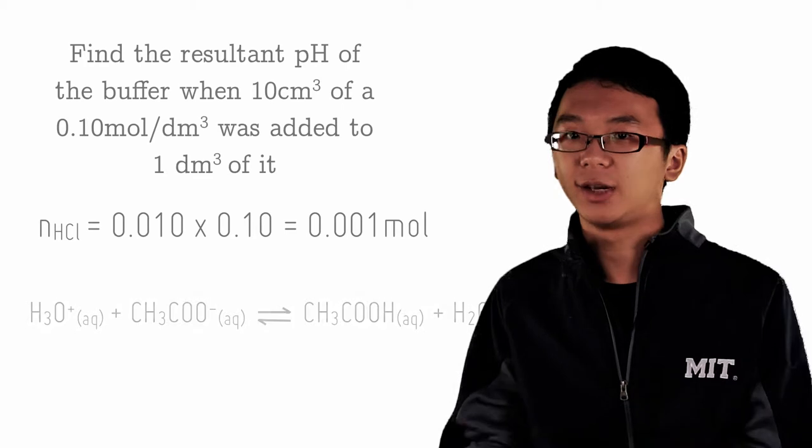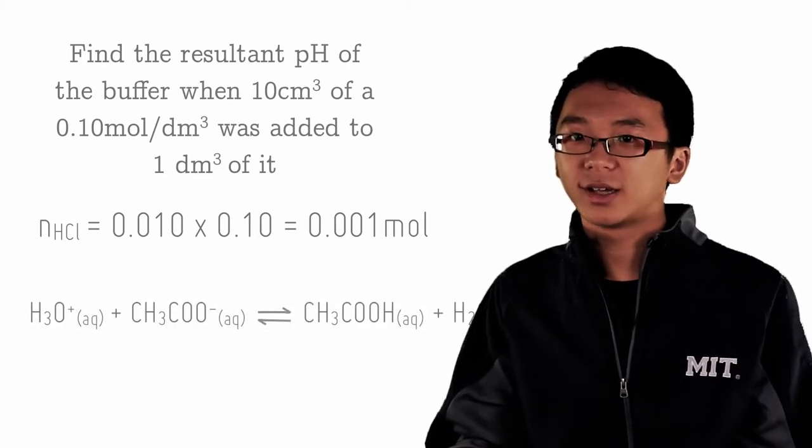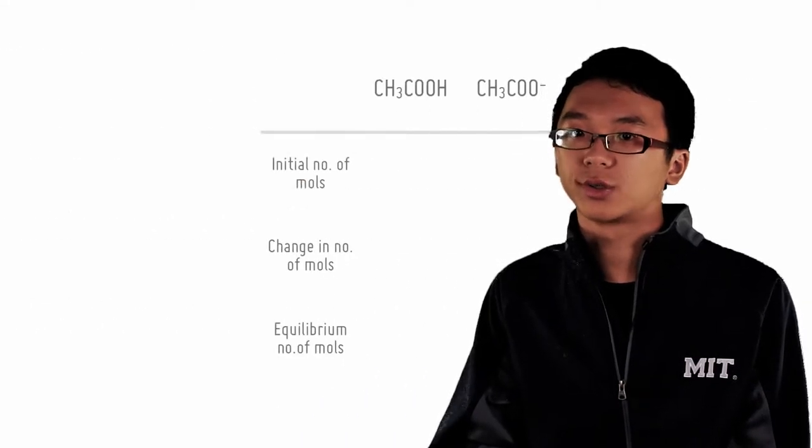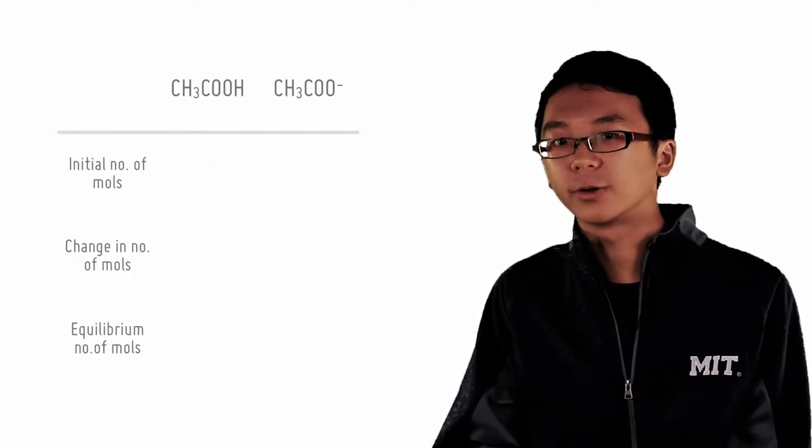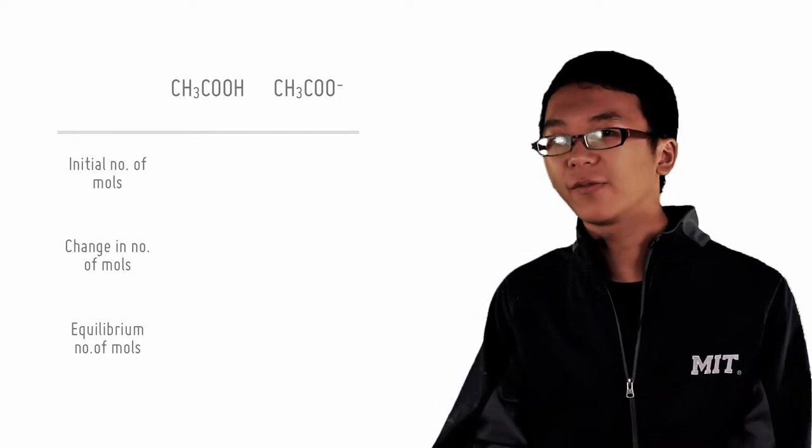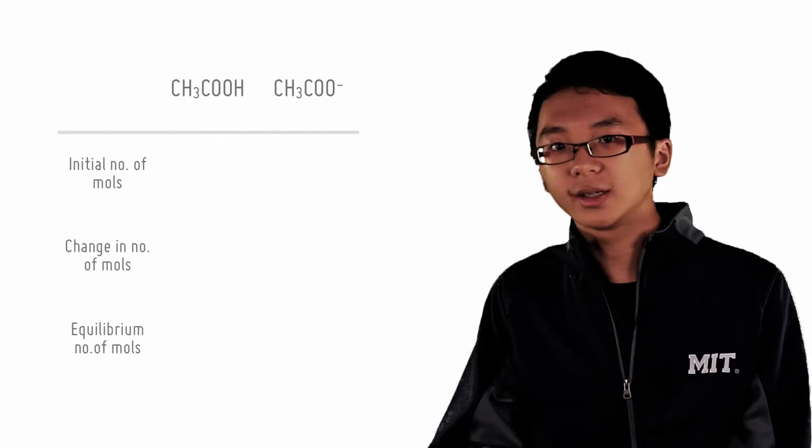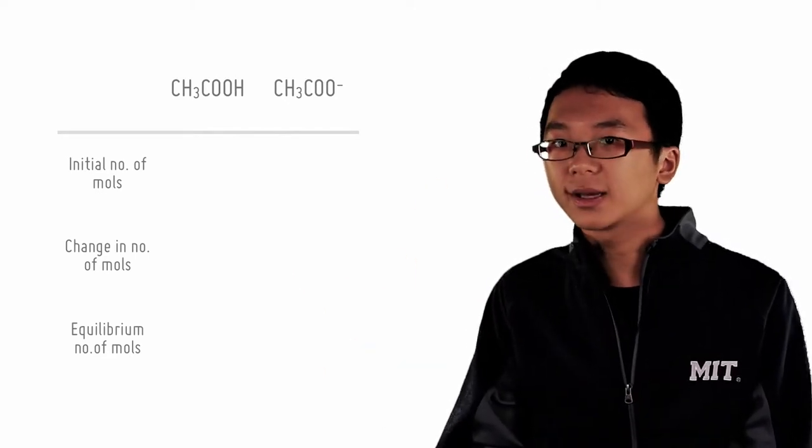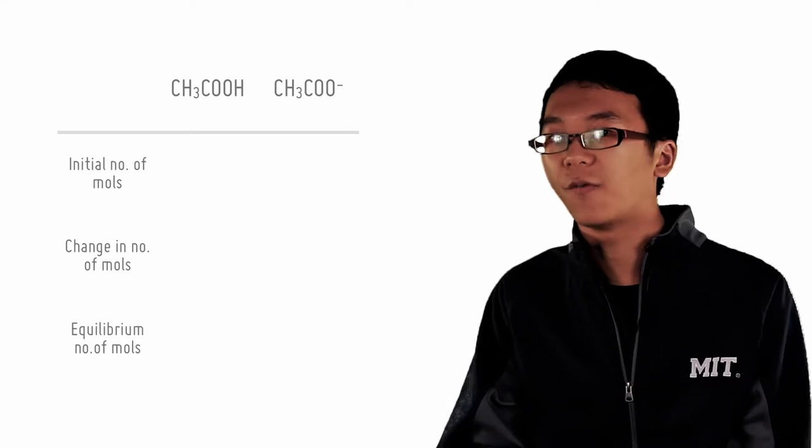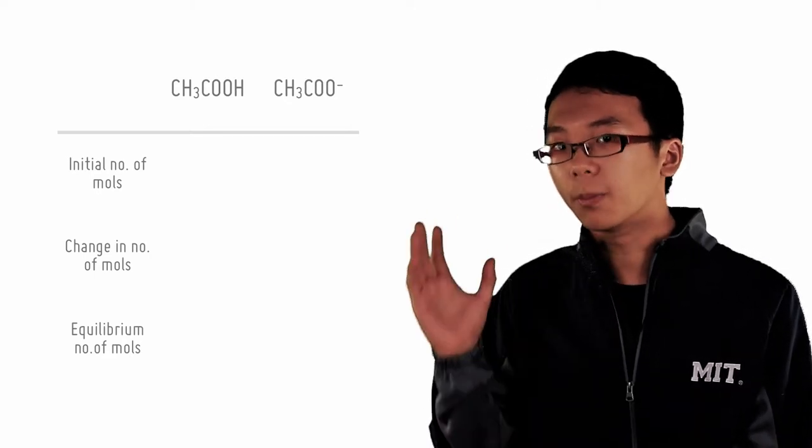we draw an ICE table with a pencil. Now, we have been using the ICE table in terms of concentration so far. That's only because so far, all our volumes have been constant. Therefore, it doesn't matter if we use concentration or moles directly. However, this time, we added 10 cm³ of acid. And we must therefore take into account the new volume. So let's fill up this ICE table in terms of moles, not molar instead.